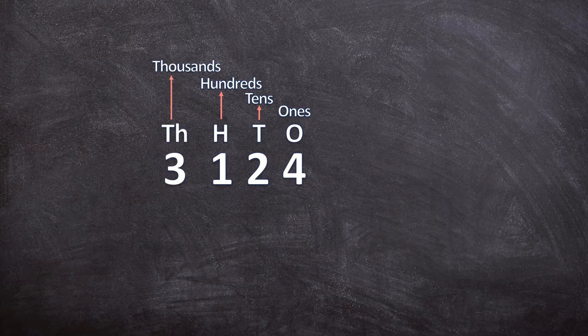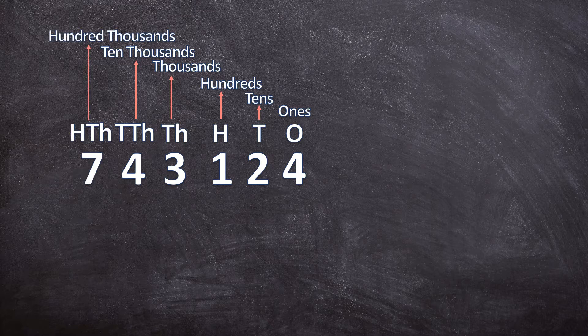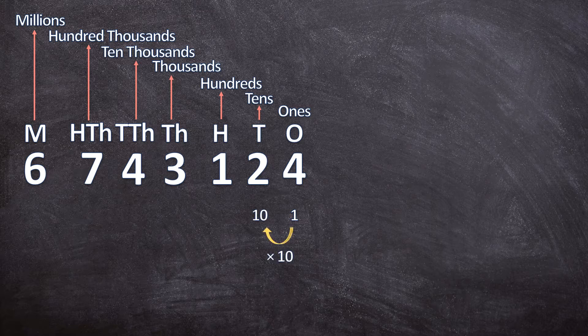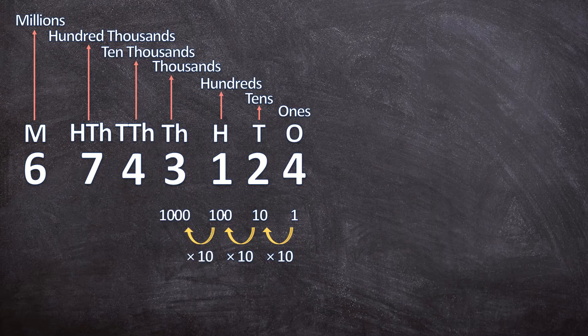Next is thousands, then ten thousands, hundred thousands, and then millions — and we can carry on and on, it never stops. What I want you to notice is that when we go from one place value to the next we multiply by ten. Every place value to the left is ten times bigger than the previous place value.